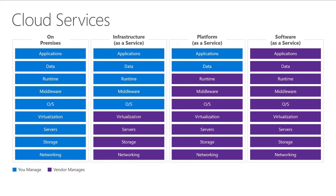If we look at the purple or the blue here on your screen, these are all of the services that you or the customer provides on their own. In an on-premises world, they take care of everything from networking all the way through applications. This includes cabling, the server hardware, the storage, the runtime versions, the applications, the software — everything.